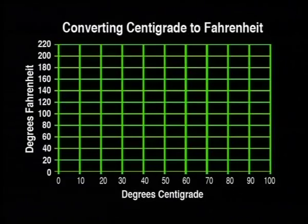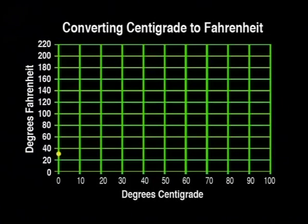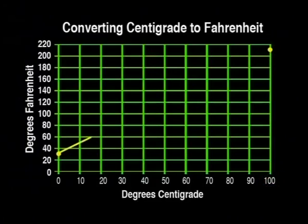We can use freezing point for our first point — that's zero on the centigrade axis and 32 on the Fahrenheit axis. And for our other point, we can use boiling point — that's 100 on the centigrade axis and 212 on the Fahrenheit axis. Then we join these two points with a straight line and we're done.